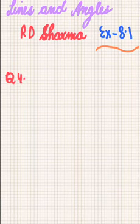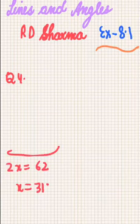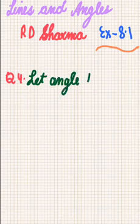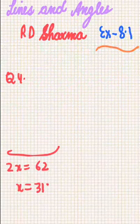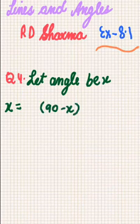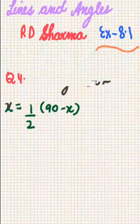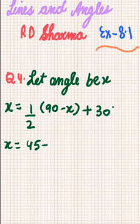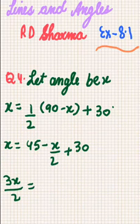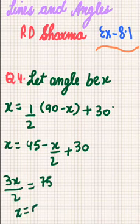Question 4: If an angle is 30 degrees more than one half of its complement, find the measure of the angle. Let the angle be x. Its complement is 90 minus x. The equation becomes: x equals one half of (90 minus x) plus 30, which simplifies to 45 minus x over 2 plus 30. Solving gives 3x over 2 equals 75, so x equals 50 degrees.